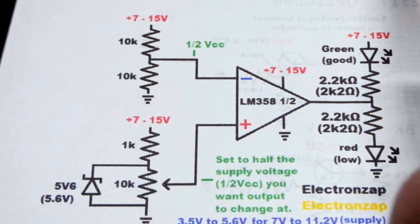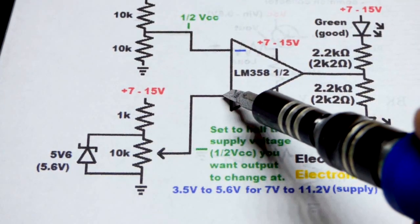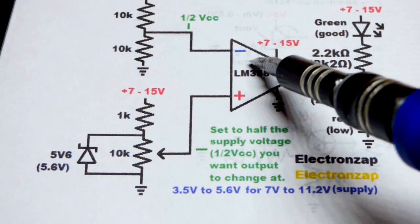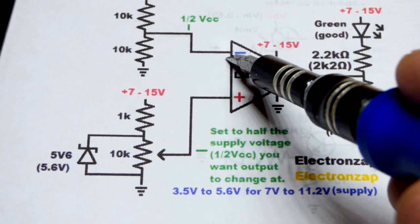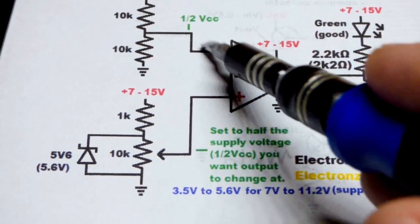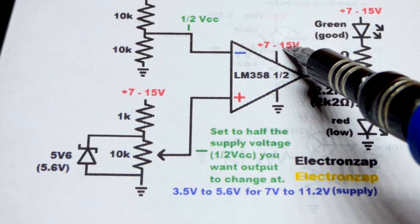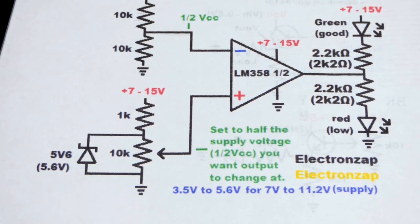If we set the trim pot to 5 volts, the op amp is going to compare when the inverting input is above or below 5 volts, and to do so the power supply voltage has to go above or below 10 volts. So I hope that makes sense.